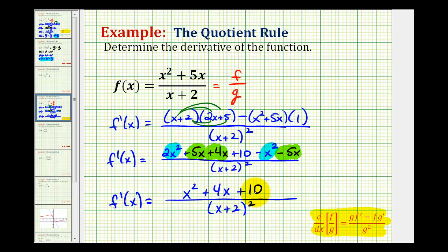Well there aren't any factors of ten that add a positive four so this is not going to factor so nothing is going to simplify. So we have our derivative function by applying the quotient rule. I hope this was helpful.